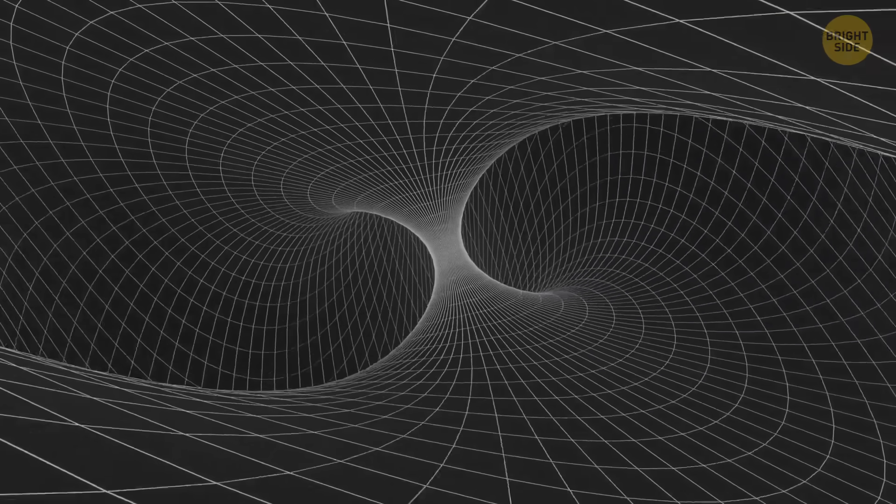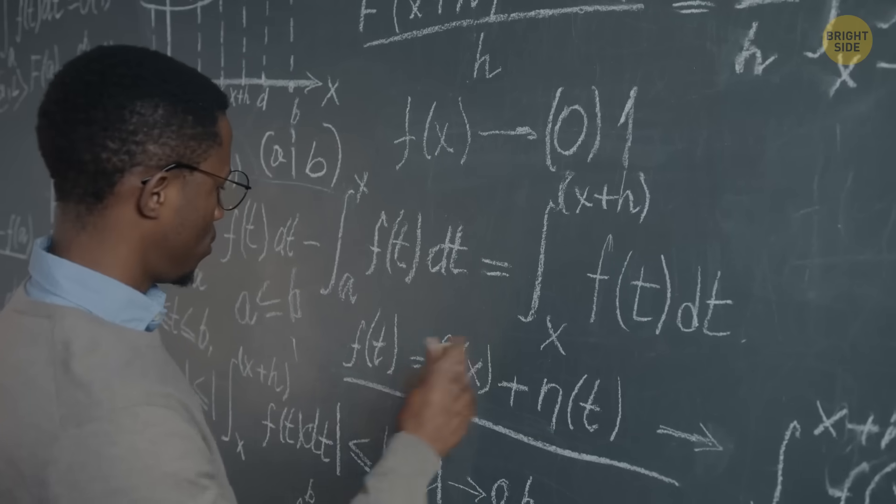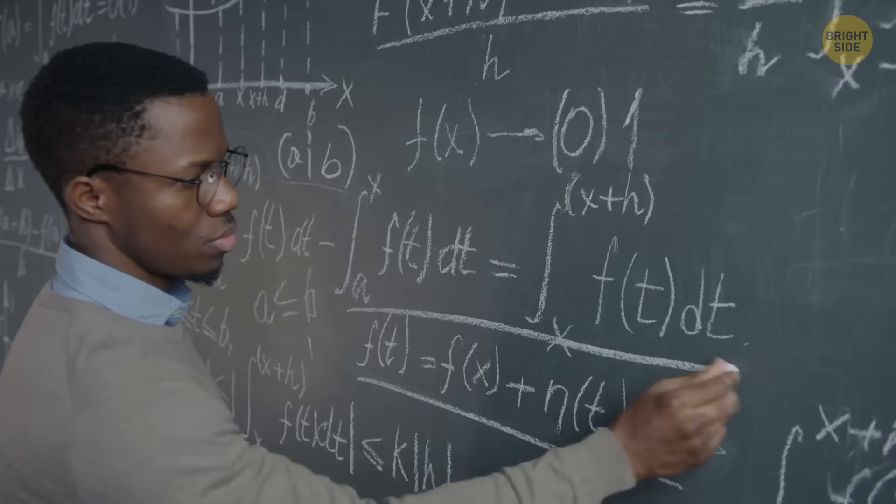But not everyone agrees that closed time-like curves exist at all. Recent research has shed new light on this topic. The results showed that time can only move forward.